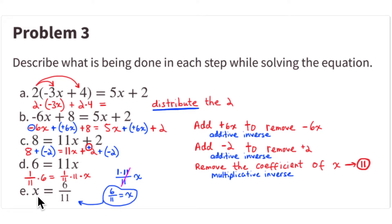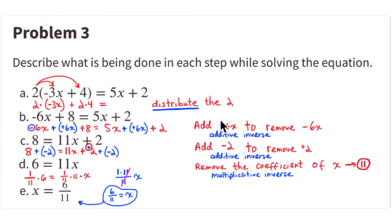The 11s cancel and you're left with x = 6/11. So the pattern to solve these equations is: distribute to remove parentheses, use the additive inverse to move variables to one side and numbers to the other, and finally use the multiplicative inverse to remove the coefficient. Distribute → additive inverse → additive inverse → multiplicative inverse is the general pattern.